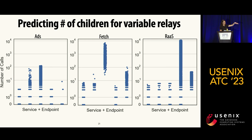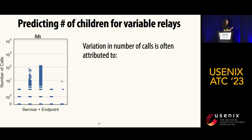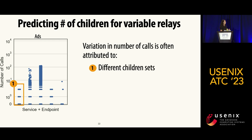I'll zoom in on a few parents to explain the variation. I've highlighted one on the left where there are three clear clusters of data points. We investigated this and found that each cluster corresponds with a specific children set — they represent different higher-level behaviors.